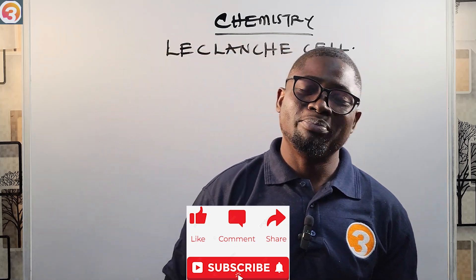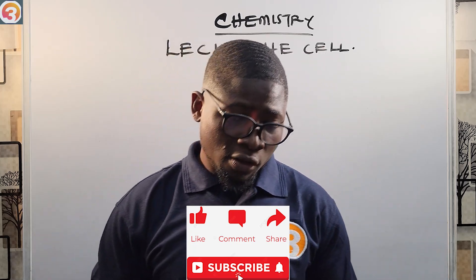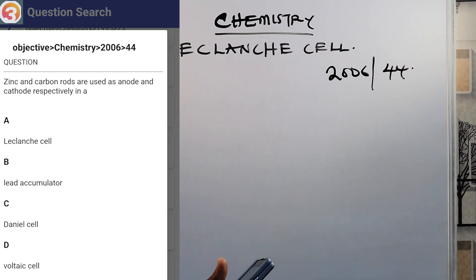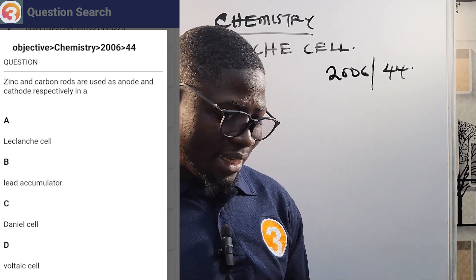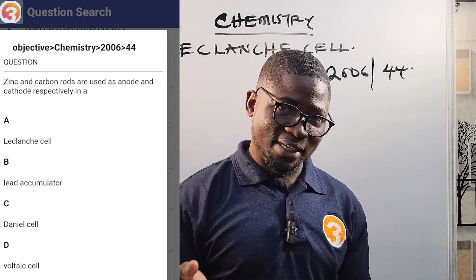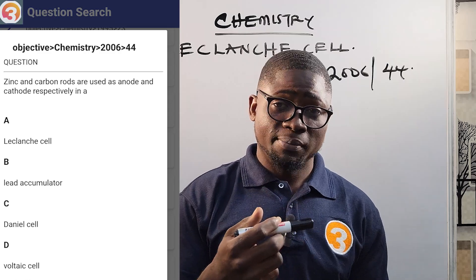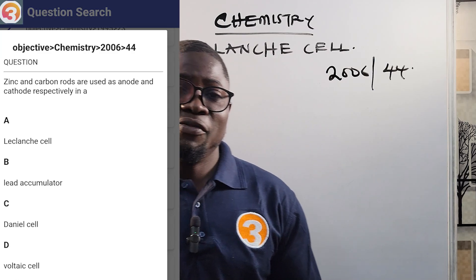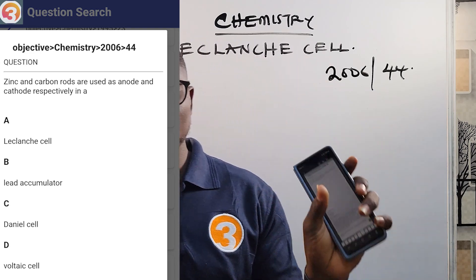I'm going to go to the Hotel Schools app that has all the past questions. This is a 2006 question, number 44. It says zinc and carbon rods are used as anode and cathode respectively — in which cell? Not the Daniel cell, because for the Daniel cell we use zinc and copper. So the answer is the Leclanché cell.